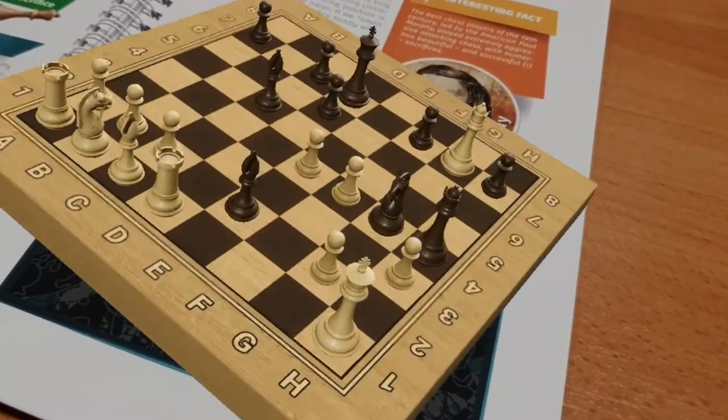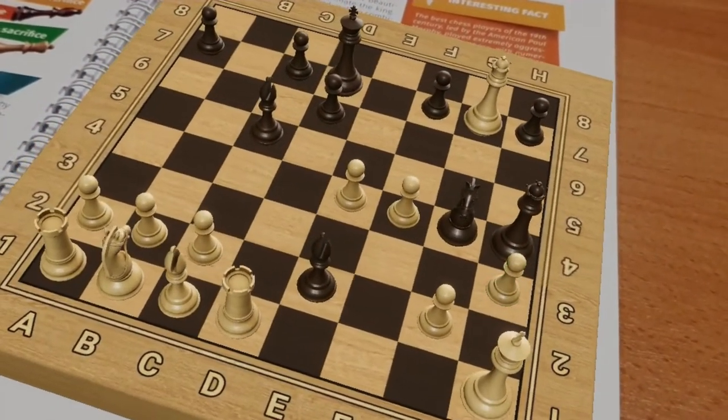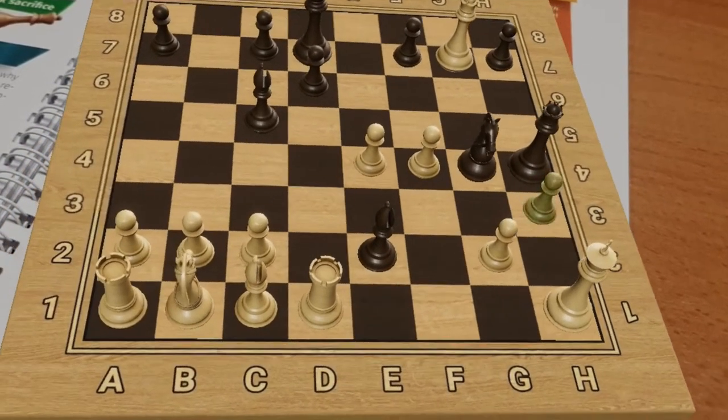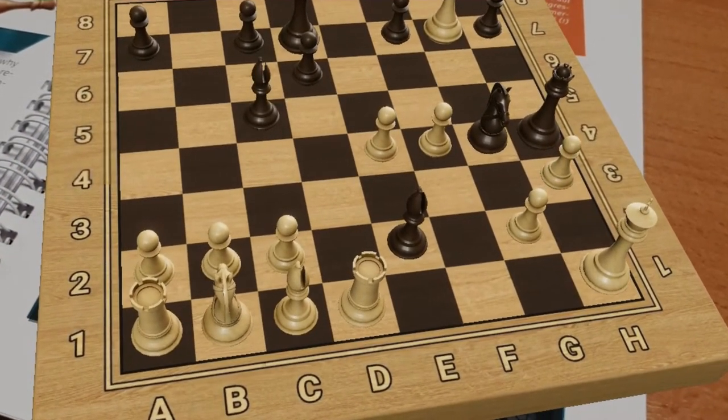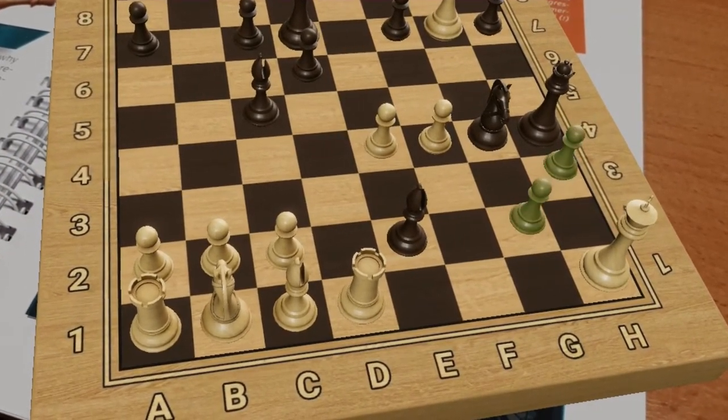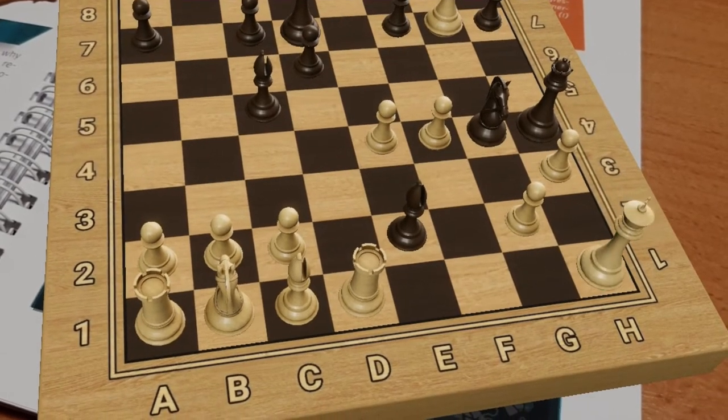If White castles to the kingside, the h3 pawn is a frequent target of sacrifices. Destroying the king position often results in an immediate mating attack.